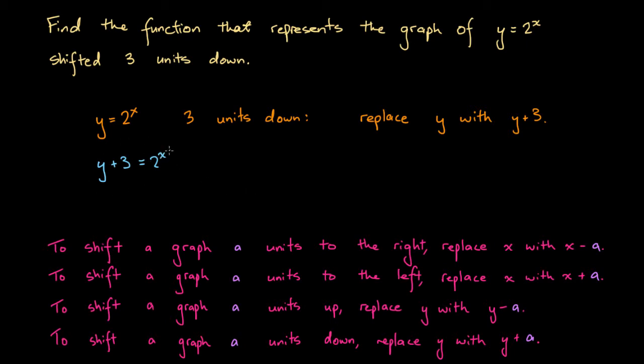That's our function. In order to make it neat, let's put it into a form where it's y equals something. So we'll subtract 3 from both sides, and if we do that we get y equals 2 to the power of x minus 3. And this is the final form that we want.